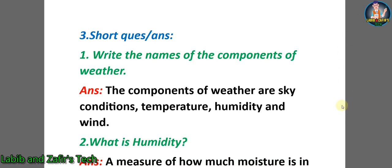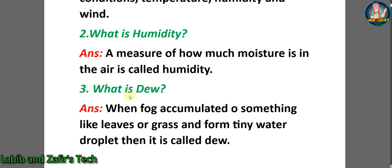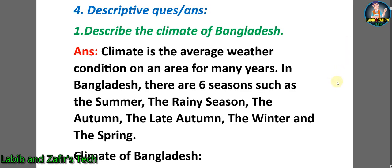Now let's go through some short question answers. Number one: write the names of the components of weather. Answer: the components of weather are sky conditions, temperature, humidity, and wind. Number two: what is humidity? Answer: a measure of how much moisture is in the air is called humidity. Number three: what is dew? Answer: when fog accumulates on something like leaves or grass and forms tiny water droplets, it is called dew.